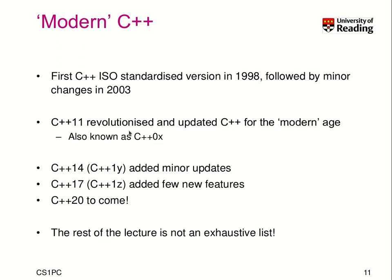Our next topic is modern C++, which is basically the idea of using newer standards of C++. The first C++ standard was available in 1998, which was just before the time when I started to learn programming. There have been changes in 2003, but then in 2011 there were a lot of changes and new concepts introduced in C++ for the modern age. This is known as C++0x or C++11.